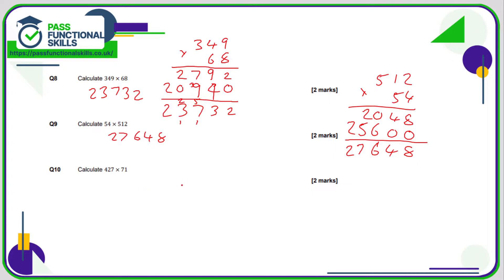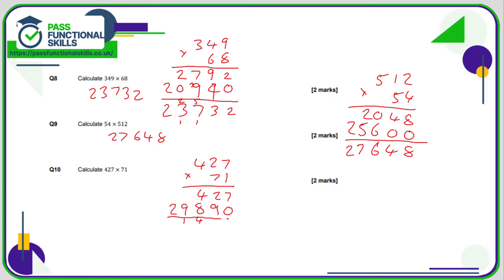Question 10: 427 times 71. 1 seven is 7; 1 two is 2; 1 four is 4 — nice and easy. This is the 7 of 70 so put in a 0: 7 sevens are 49, 9 carry 4; 2 sevens are 14 plus 4 is 18, 8 carry 1; 4 sevens are 28 plus 1 is 29. Adding together, the answer is 30,317.